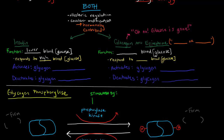Glucagon — the way I remember it is: 'glucose is gone, so make more.' It's actually involved in increasing blood glucose levels, so it responds to low blood glucose levels. Epinephrine, you might know as the fight-or-flight hormone. When you're in danger, epinephrine is active and it also functions like glucagon in that it increases blood glucose levels, because you need energy to fight or flee.